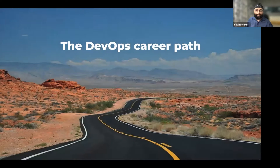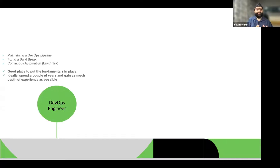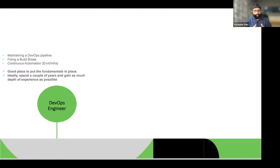Let's talk about the DevOps career path. I've taken a simplistic but holistic view. You typically start as a DevOps engineer — maintaining a pipeline that's already been set up, fixing build breaks, which requires a good understanding of the code, the underlying infrastructure, and the operating system. There's also continuous automation on the environment, application, or infrastructure side, depending on where you're placed.